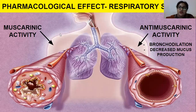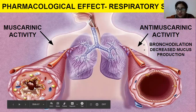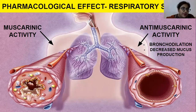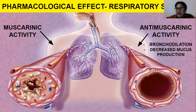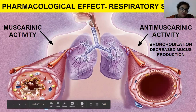Regarding the respiratory system: the entire respiratory system is covered with an epithelial layer containing goblet cells that secrete mucus. With muscarinic activity, bronchioles constrict and excess mucus is secreted. With anti-muscarinic activity, bronchodilation occurs and mucus production is reduced. The image shows the difference: one side has thick mucus-flooded walls with inflammation, and the other is clear and open.